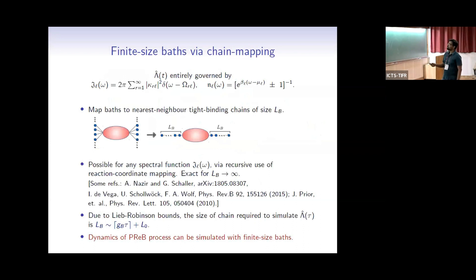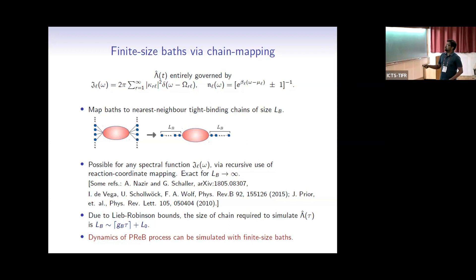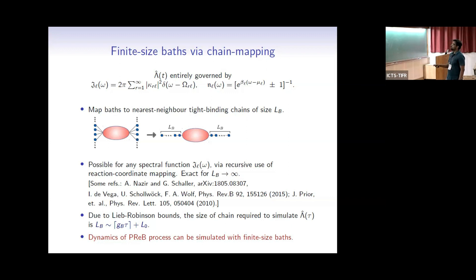One advantage: this map is entirely governed by the bath spectral functions and the Bose or Fermi distribution corresponding to the initial state of the baths. Our original setting had an infinite number of modes, but there is a way to construct a tight-binding chain with only the first site coupled to the system, such that if you diagonalize this semi-infinite chain — going to normal modes — you get back exactly the same modes. This reaction-coordinate mapping, applied recursively, yields such a chain.